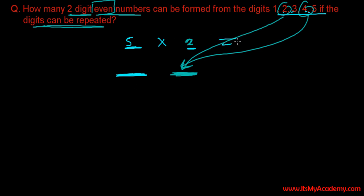So 5 times 2, that is 10 ways. So how many 2 digit even numbers can be formed? So we can form 10 two-digit even numbers from the numbers 1, 2, 3, 4, 5 if repetition is allowed.